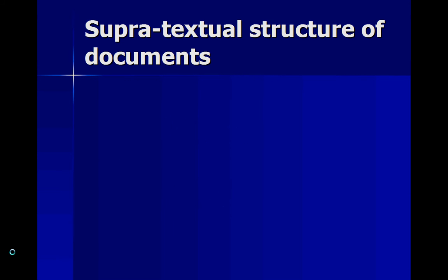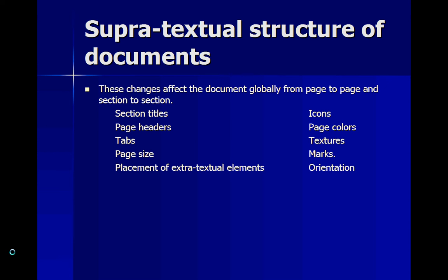Then there's the supertextual structure of documents — these are more global considerations such as section titles, page headers, tabs, page size, placement of extra-textual elements, icons, page colors, textures, marks, and orientations. Basically, anything used throughout the entire document — font size, spacing, and so on — would be supertextual considerations for the structure of the document.